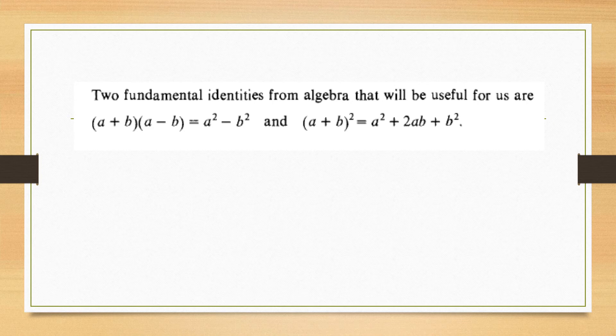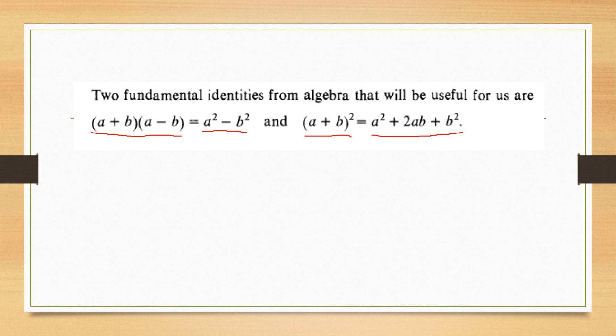We are well aware of the fundamental identities from algebra that are very useful. We know that the product of two factors (a+b)(a−b) is always equal to a² minus b², and the square of (a+b) is equal to a² plus 2ab plus b². Keeping these in mind, you can evaluate such types of expressions.